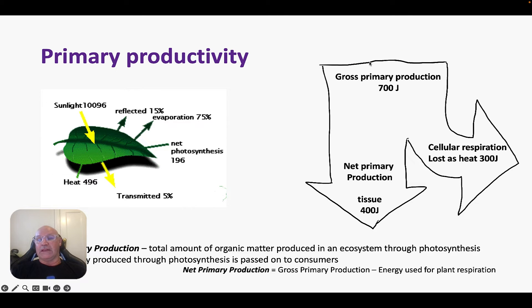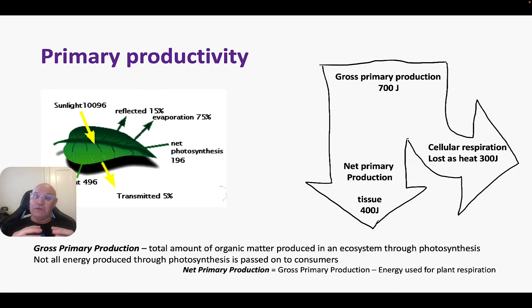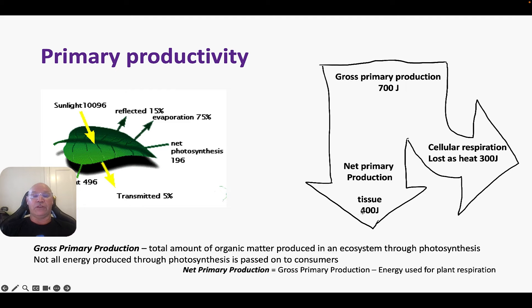I've drawn what we call a Sankey diagram. For example, the gross primary production is all of the energy actually produced through photosynthesis. Some of that is lost as heat — say out of 700 joules, 300 joules is lost as heat through cellular respiration, since the plant undergoes cellular respiration for its metabolic processes. In this case, 400 joules of energy goes into biomass, producing tissue within the plant that stores that energy. So gross primary production is the total amount of organic matter produced, but not all that energy is passed on to consumers — some is used by the plant. The net primary production is what actually gets passed on to the consumer.